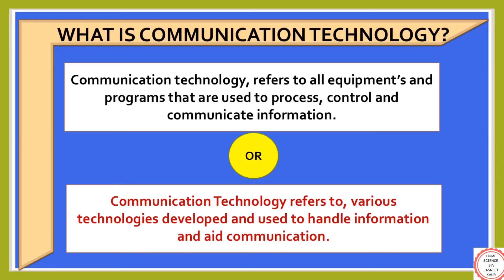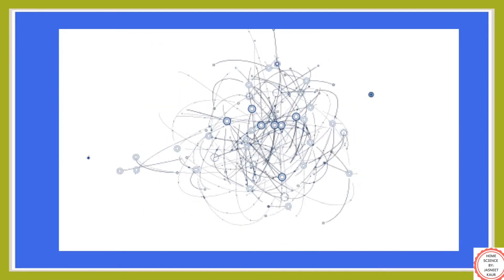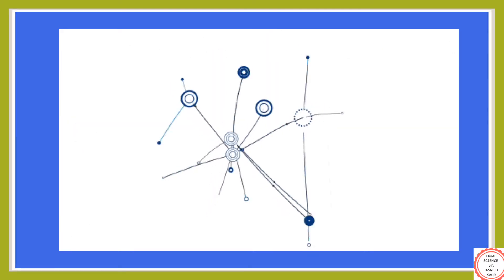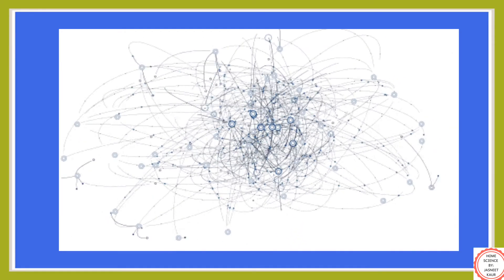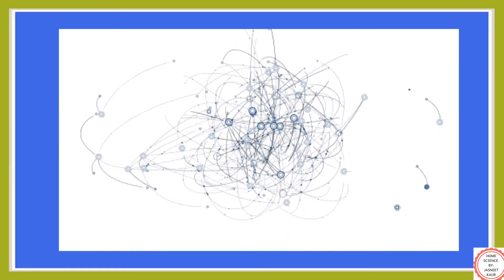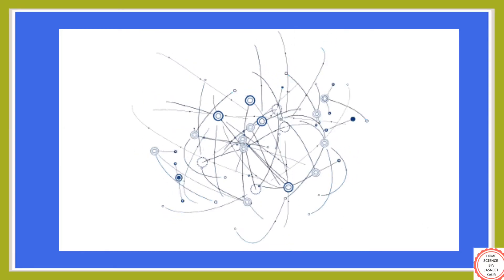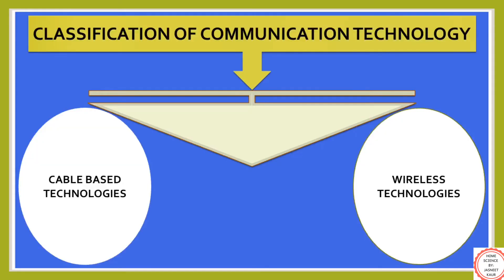Let's understand first, what is it? It includes all the equipments and computer programs which are used to pass on some information to other people. In other words, communication technology refers to all those technologies which are developed and used to handle information and promote communication. In simple words, communication technology is the transfer of information among people or machines through the use of technology. It can be classified as cable-based technologies and wireless technologies.